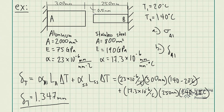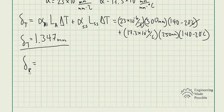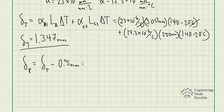We have a gap of 0.5 millimeters to keep in mind. To solve for how much force is developed within the materials due to making contact, the deformation that actually causes force equals the thermal expansion deformation minus the gap. The 0.5 millimeters of gap does not contribute to the force being developed. This gives us 1.347 minus 0.5 equals 0.847 millimeters — this is the deformation that will actually contribute to the force developed within the rods.